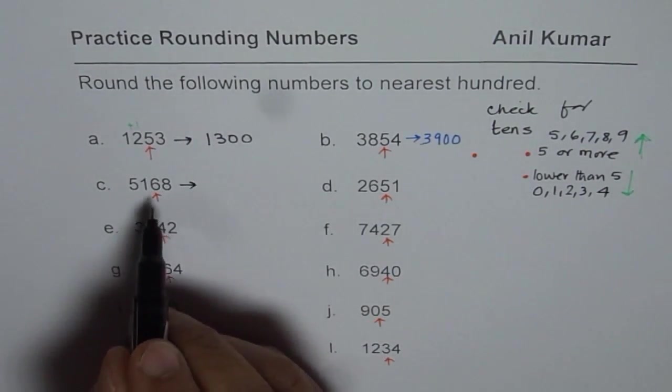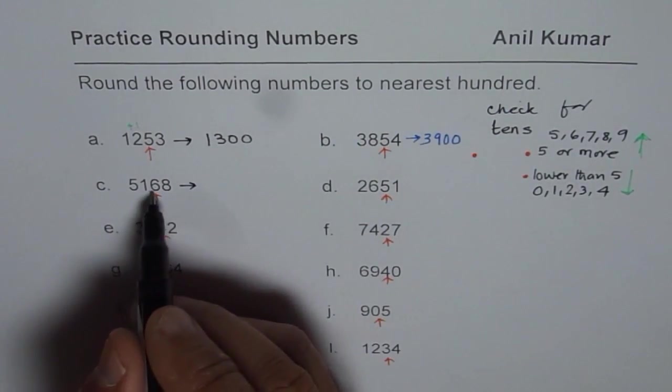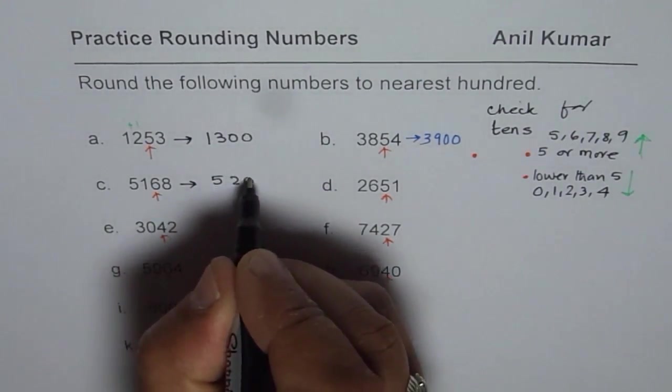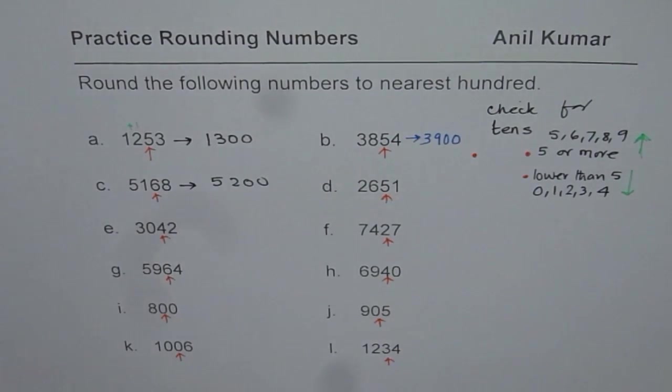Next number here is 6, which is also 5 or more, higher. So 168 becomes 200. So we write 5200. Numbers on left side of 100 will not change.